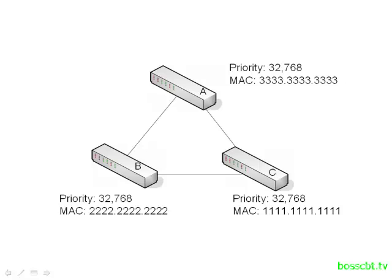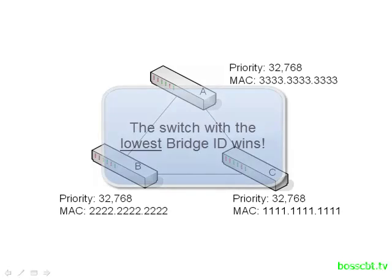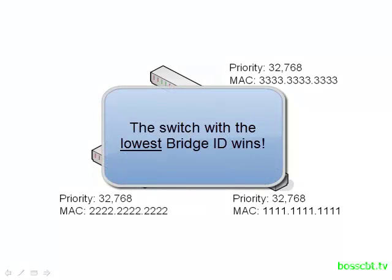Once they start exchanging information, that drastically changes. The rule as to who becomes the ultimate root bridge is very simple: the switch with the lowest Bridge ID becomes the root bridge.